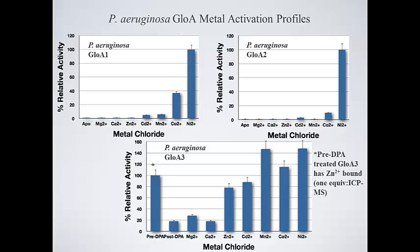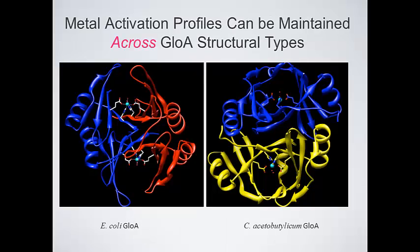Interestingly, the Pseudomonas aeruginosa PA-01 genome has been found to contain three different open reading frames which can code for three different glyoxalase-1 enzymes. Investigations have shown that two of them are activated by nickel ion but not zinc, and the other has properties like those of the human and yeast glyoxalase-1 enzymes — that is, they are active in the presence of zinc.